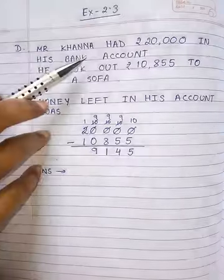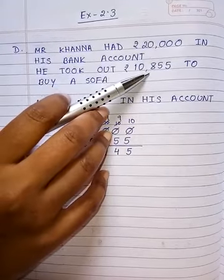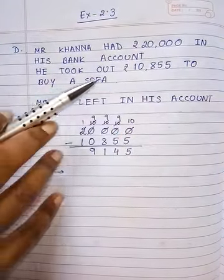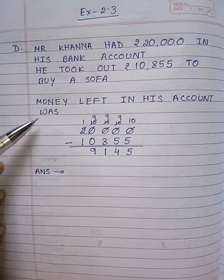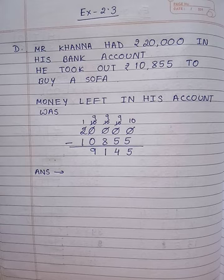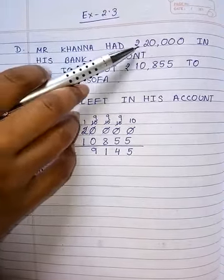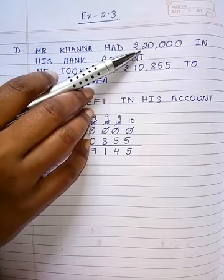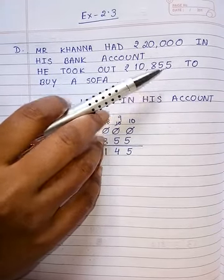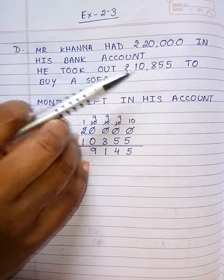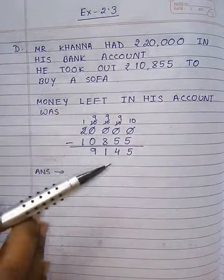Next, sum number D. Mr. Khanna had rupees 20,000 in his bank account. He took out rupees 10,855 to buy a sofa. Money left in his account — how much money is left? How much money is left means you have to subtract these two numbers, because he took out money, so the quantity decreased. Subtract to find how much decreased.